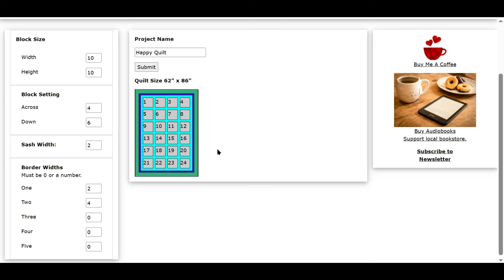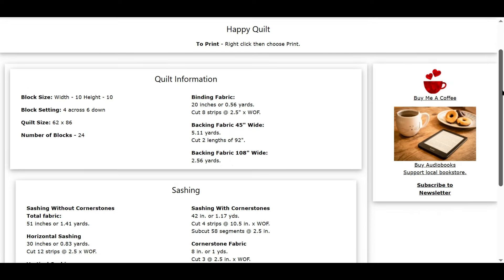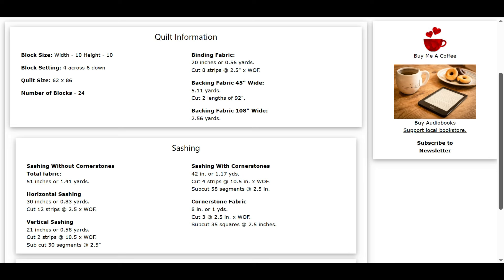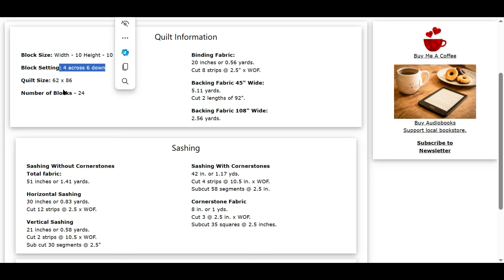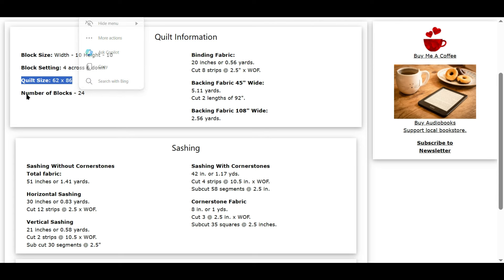When you're happy with all of these numbers, click the Submit button, and this will give you all of the fabric requirements and cutting instructions you need for everything but the blocks. Here is the quilt information. Our block size is 10 by 10. The block setting is 4 across and 6 down. Quilt size is 62 by 86. And the number of blocks is 24. When we go to the next step, which is looking up blocks, you'll have to know the size of the block and the number of blocks you need.